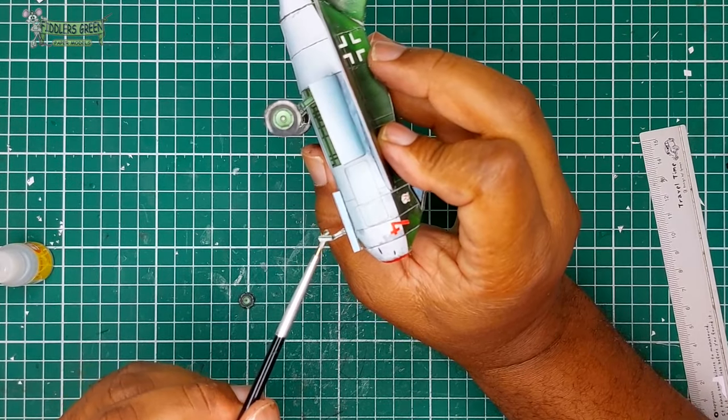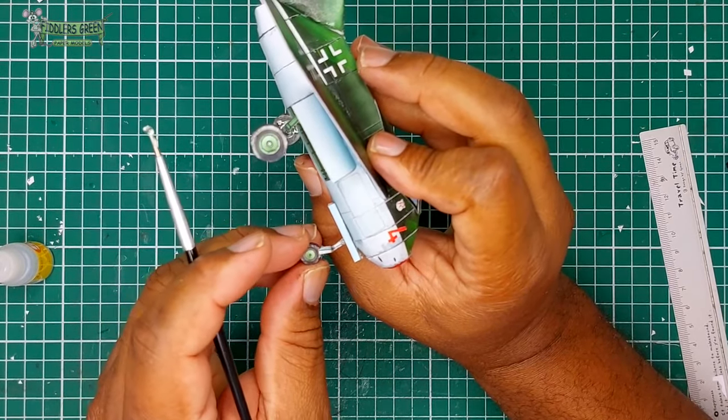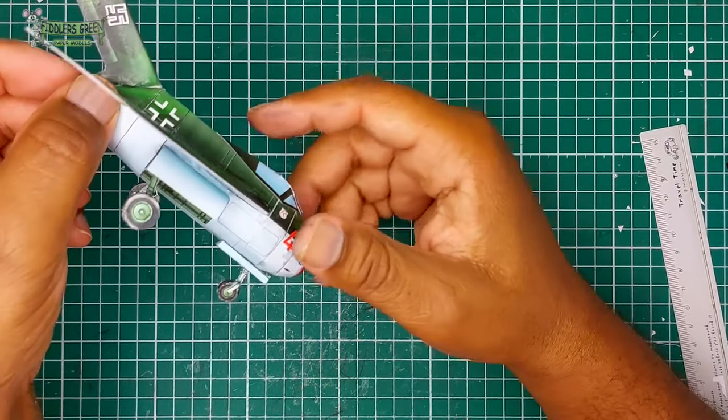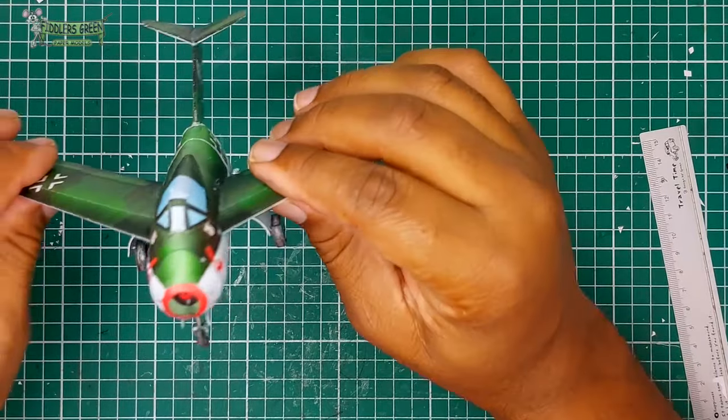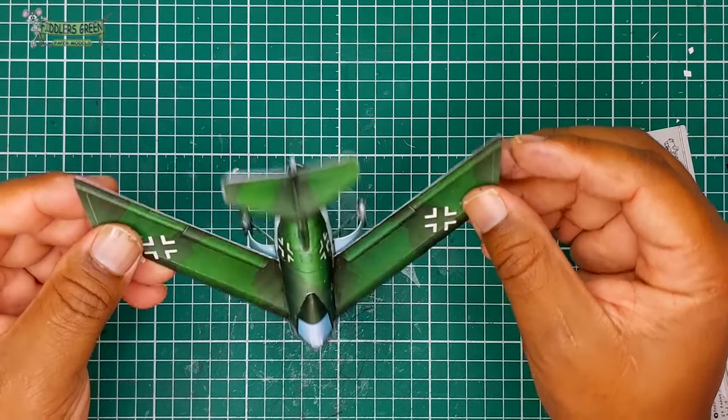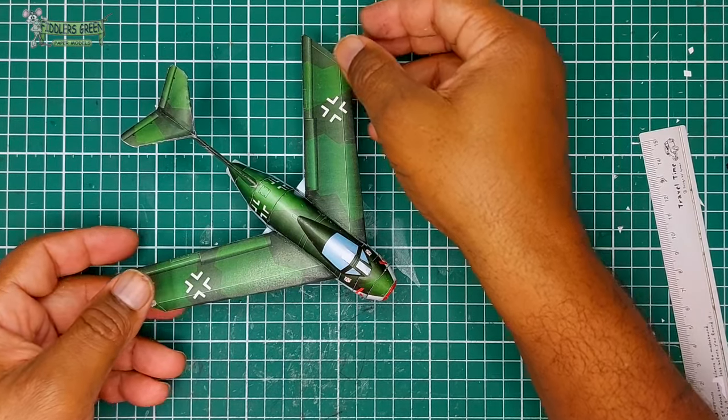After we put on our main landing gear wheel, we then put on our nose wheel. We take special care to make sure. Secure it with superglue. And we have ourselves a Focke-Wulf TA-183. Now it's time to finish her up with some good old painting.